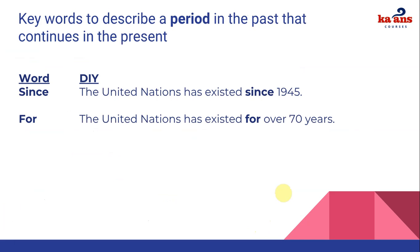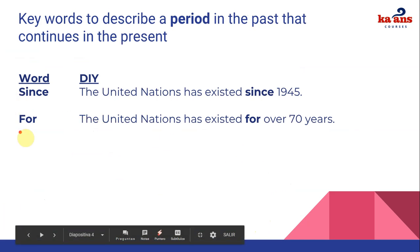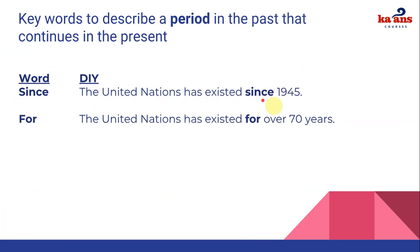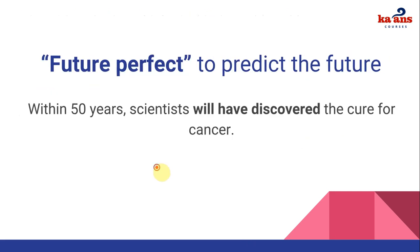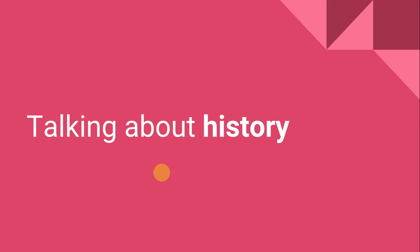We also have vocabulary for describing a period of time in the past that continues in the present. For example, the United Nations — using 'since' and 'for': the United Nations has existed since 1945, a specific time, or the United Nations has existed for over 70 years. We use the present perfect because the United Nations still exists in the present.